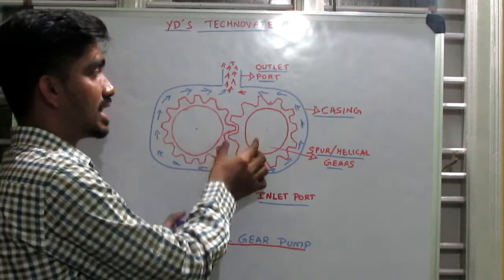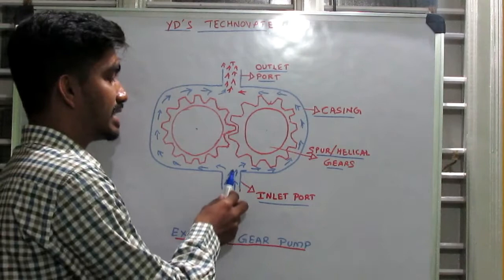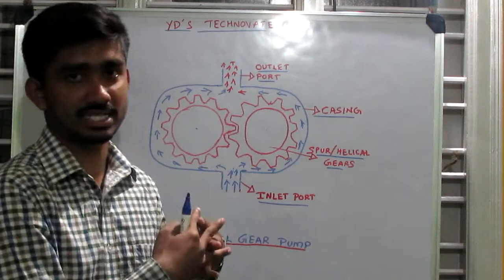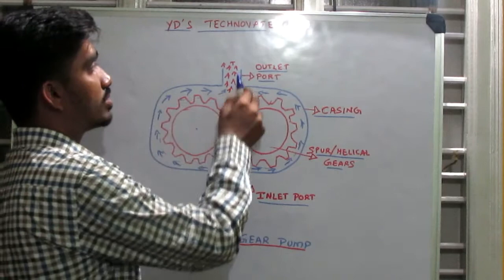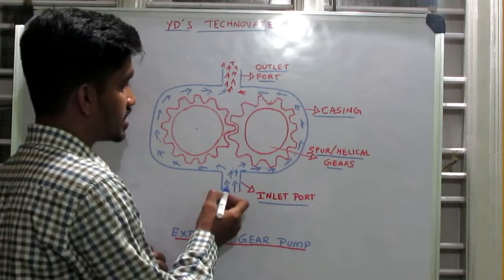As the spur gear starts rotating, the fluid with low pressure gets inside the casing. Since there is no gap and the gears are meshed, the fluid will pass throughout the casing and come out of the outlet port with high pressure. Hence, the low pressure fluid is converted